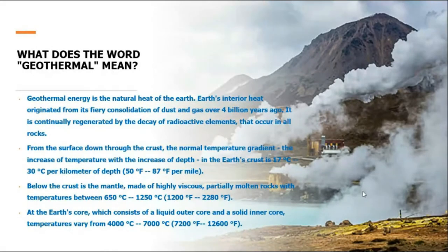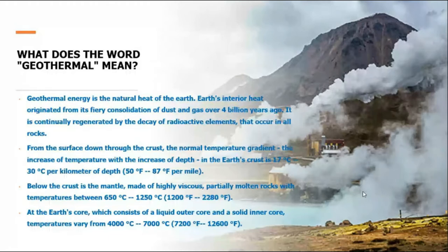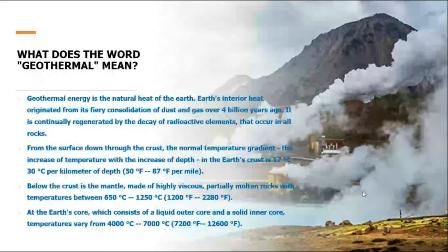From the surface of the crust, temperature varies from location to location, but on an average in the range of 17 to 30 degrees Celsius per kilometer. Temperature increase depends on the location — from 17 to 30 degrees. When we go down to the ground, at 1 kilometer the temperature can be around 200 degrees Celsius.